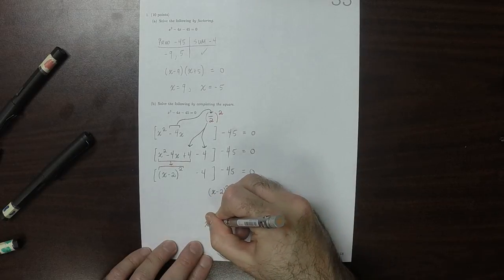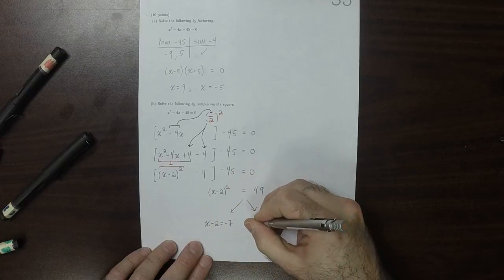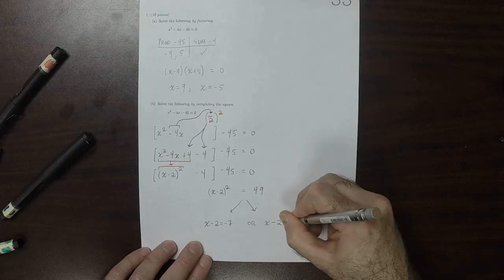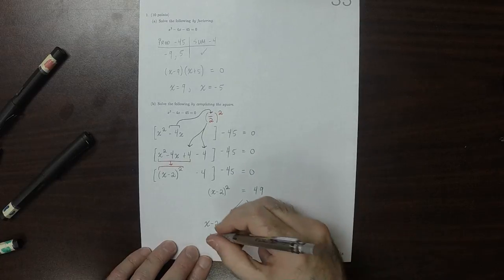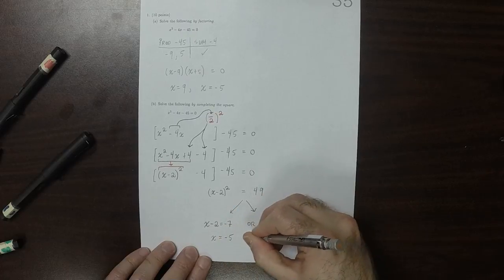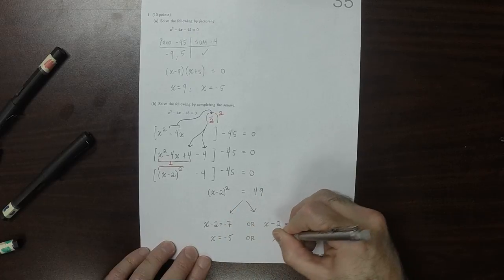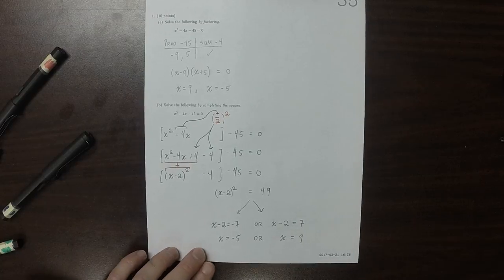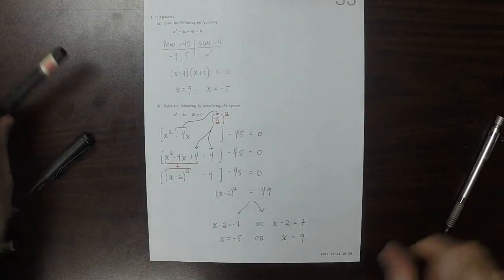So x minus 2 could be negative 7, or x minus 2 could be positive 7. So x is negative 5, or x is negative 9, which is, of course, the same.